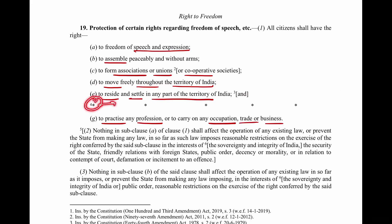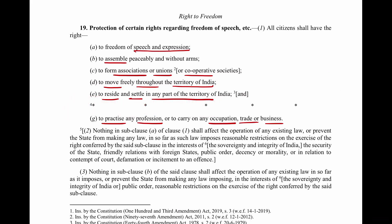Originally there were seven rights here, but the 44th Amendment Act removed the right to acquire, hold and dispose of property from the list of fundamental rights. So right to property is no longer a fundamental right. You know that with each of these rights there are reasonable restrictions.